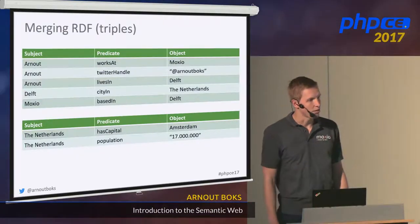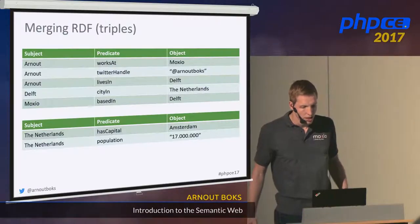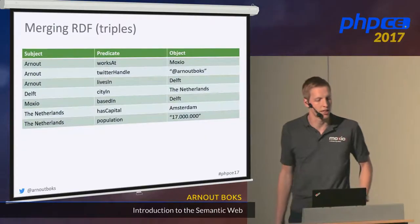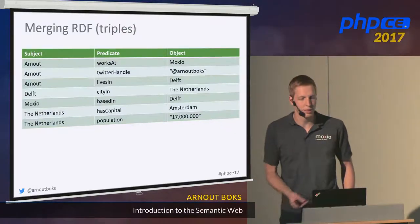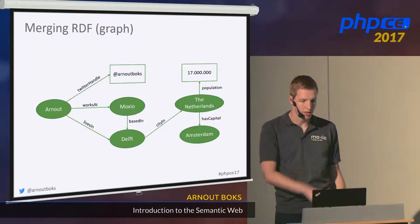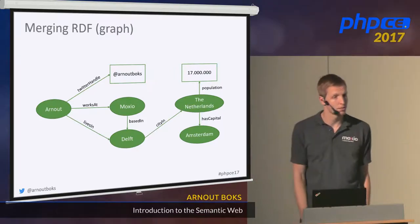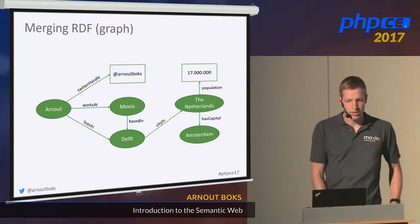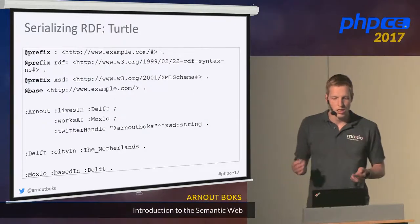Suppose we have this dataset and a second dataset with information about the Netherlands — maybe from the Dutch Statistical Office — saying the Netherlands has Amsterdam as its capital and a population of about 17 million. How would we combine this information? It's pretty easy: we have two tables, each with three columns, so we just put the rows together. Data is merged. If we then turn this into a graph, we have linked the data together. This is the concept of linked data — you can easily merge data from all different sources to form a giant graph.